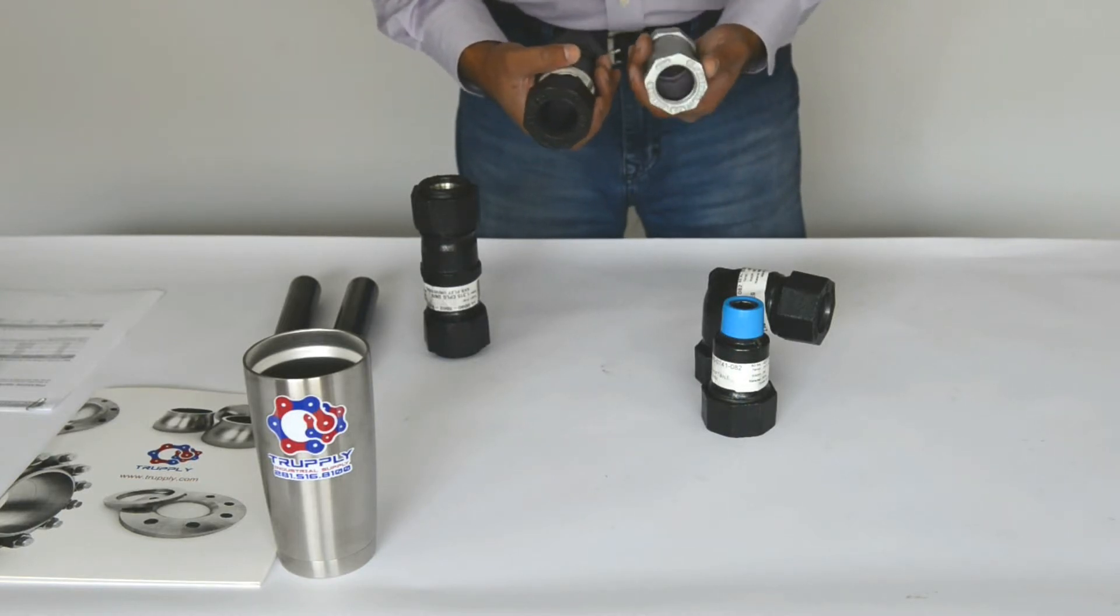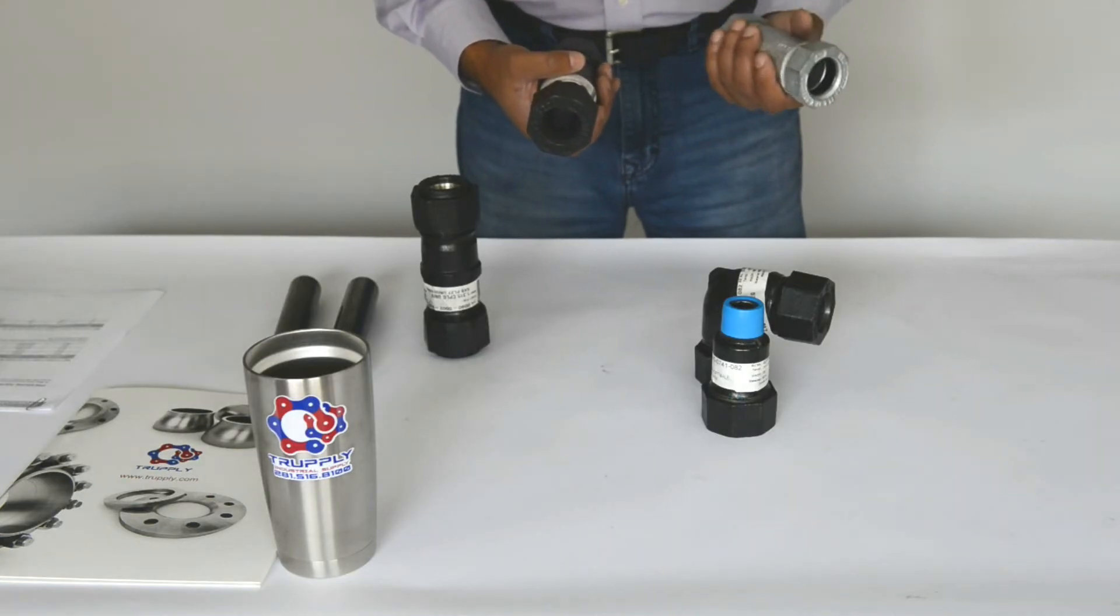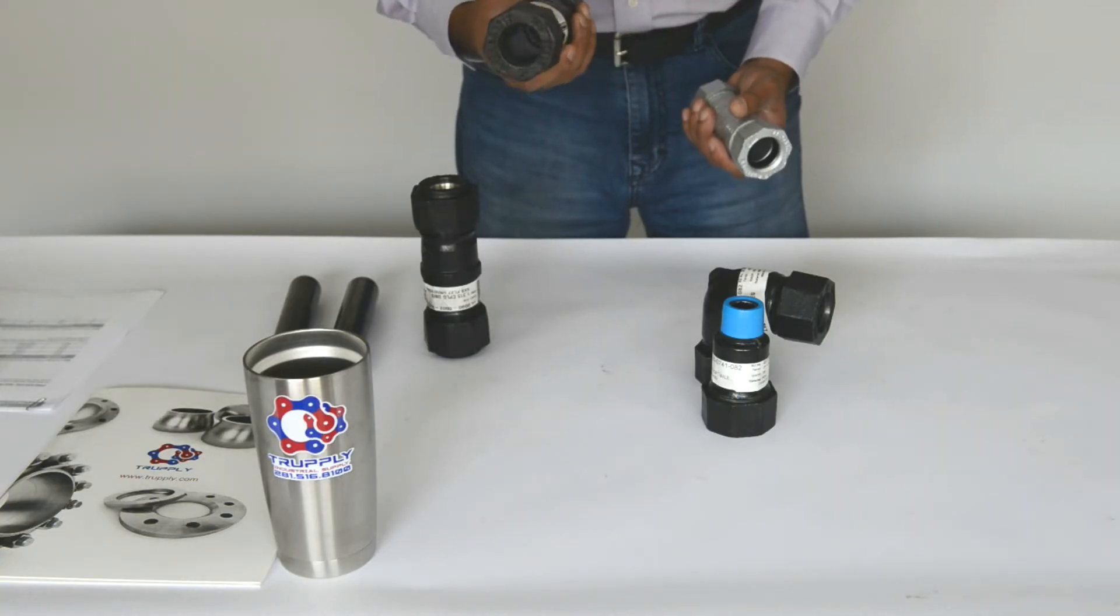They both are compression coupling, compression fitting. Style 65 is a 150 pound coupling whereas Style 90 is a 300 pound. So for a much more rugged application, you will use a Style 90.